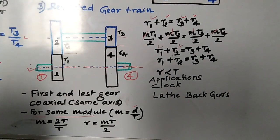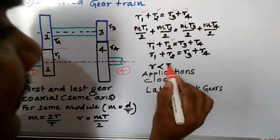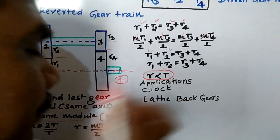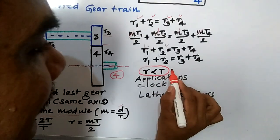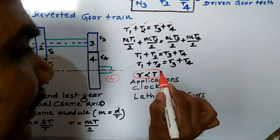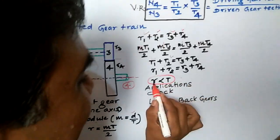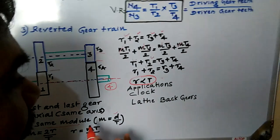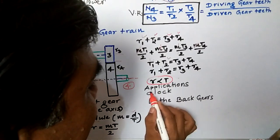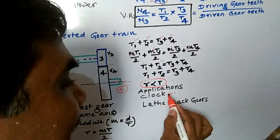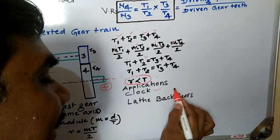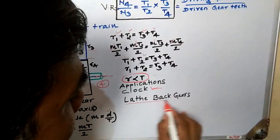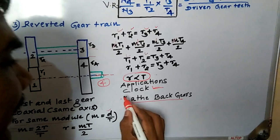Remember: the pitch circle radius of a gear is directly proportional to the number of teeth when the module is the same (same circular pitch). The application of the reverted gear train can be found in clocks — the minute hand and hour hand dials are on the same axis — and also in back gears of a lathe machine.